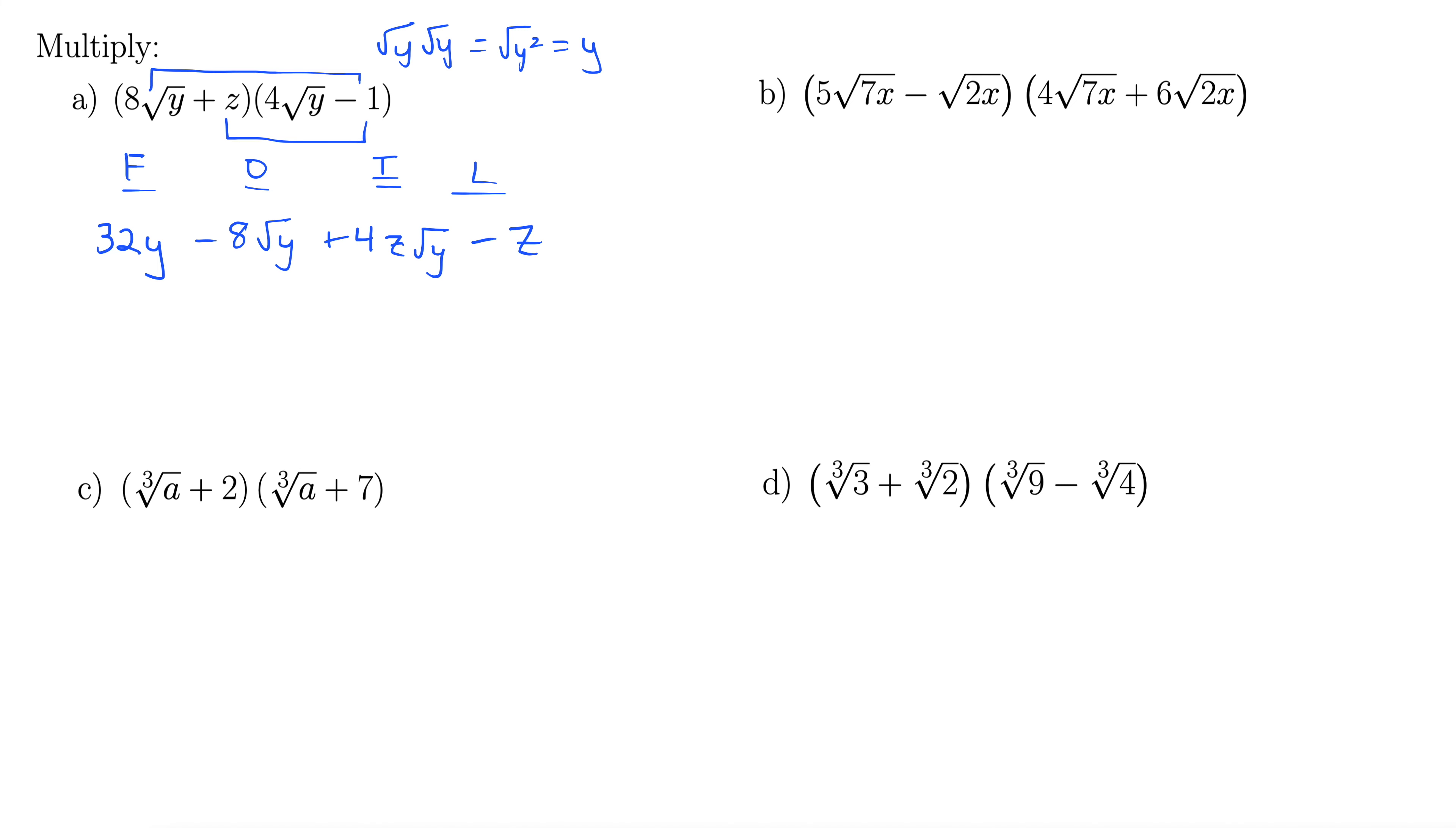Now, you combine like terms only when all the variables and the radicals line up. So here, if you look at this, we have a y, we have a rad y, we have a z rad y, and we have a z. None of those line up, so there's no further simplification we can do here. That long thing is our final answer.